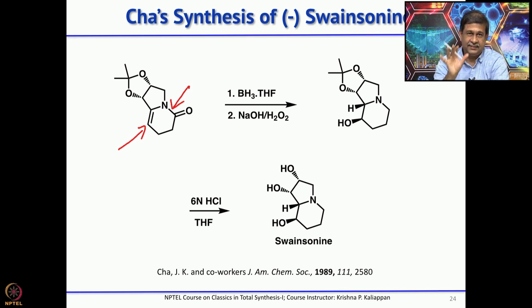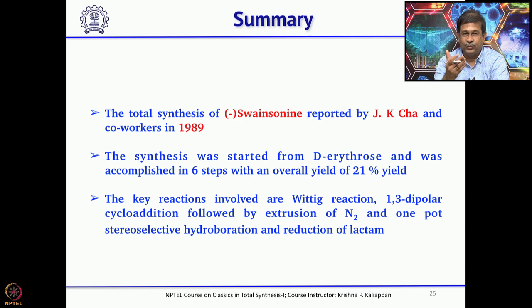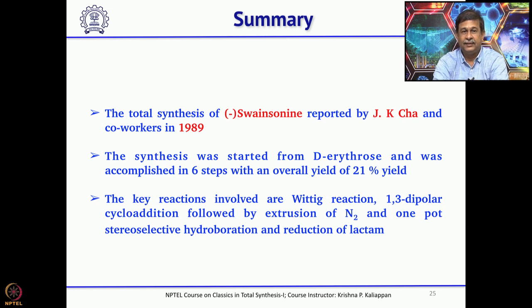Looking at all three syntheses, they all started with chiral starting materials: two started with D-erythrose, one started with D-mannose. Cha reported the total synthesis of swainsonine in 6 steps with an overall yield of 21%.